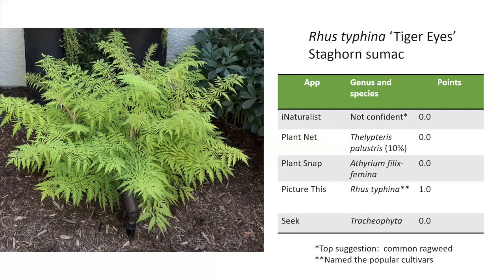I wanted to try a shrub — this is staghorn sumac, but it's a plant that's been bred or selected because it has dissected leaves, which are not typical for the species. There were all sorts of answers: iNaturalist's top suggestion was common ragweed — this is not common ragweed. PlantNet came up with a species I'd never heard of. PlantSnap thought this was a lady fern. Only PictureThis identified it as Rhus typhina.